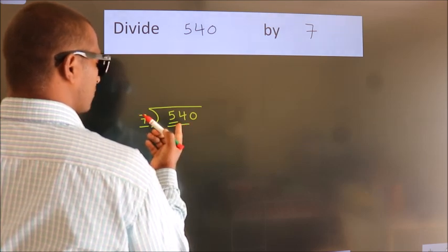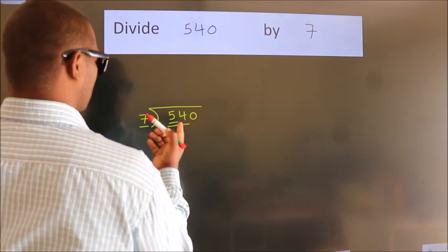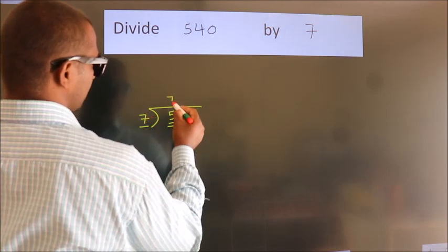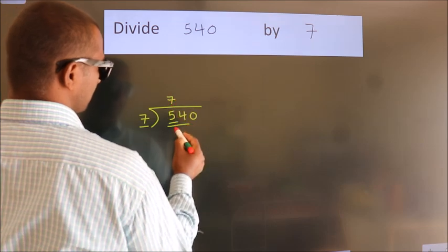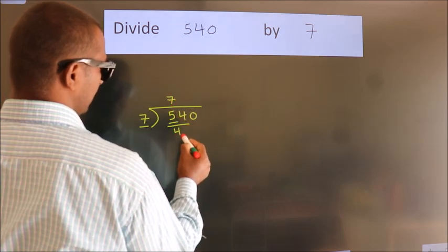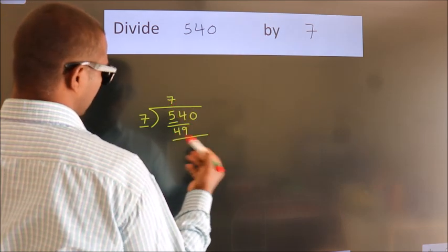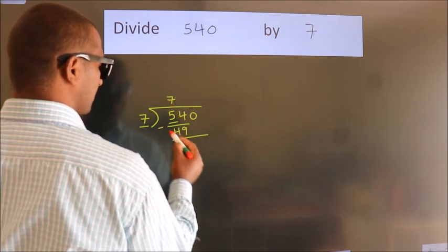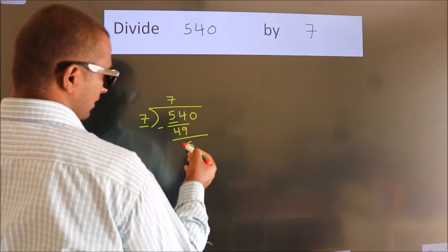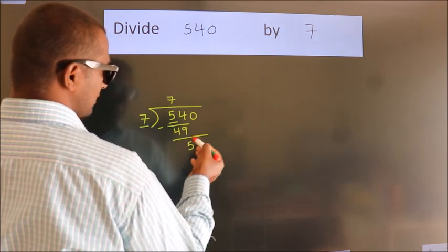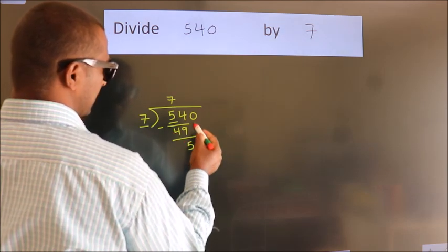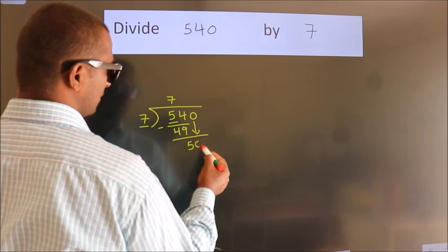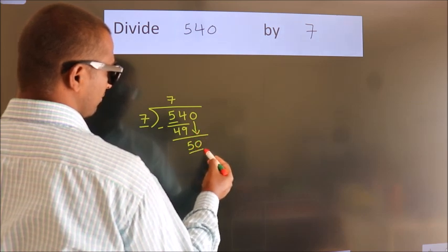A number close to 54 in the 7 table is 7 sevens, 49. Now we should subtract. We get 5. After this, bring down the beside number. So 0 comes down. So we have 50.